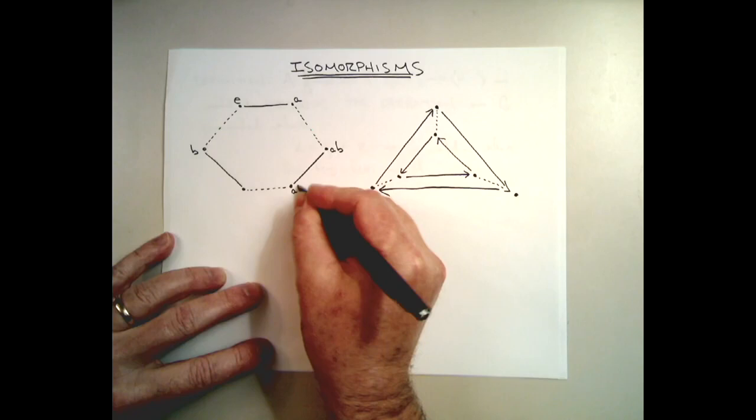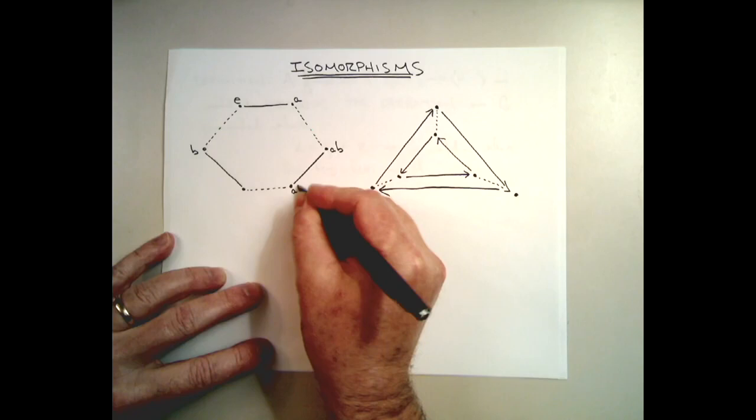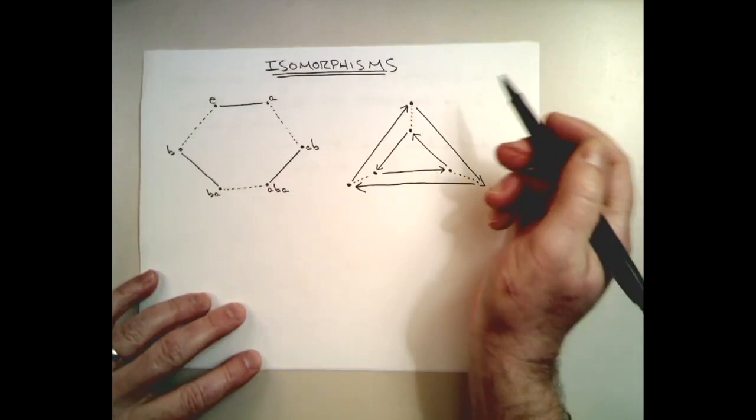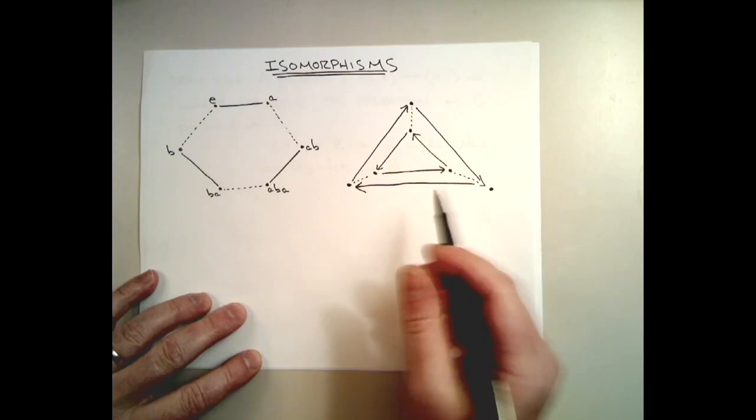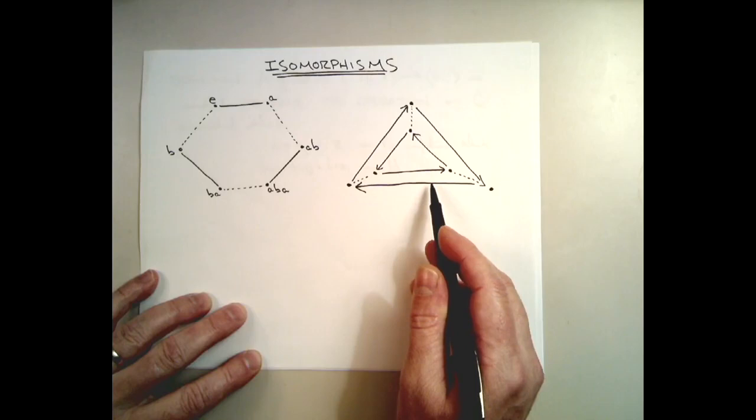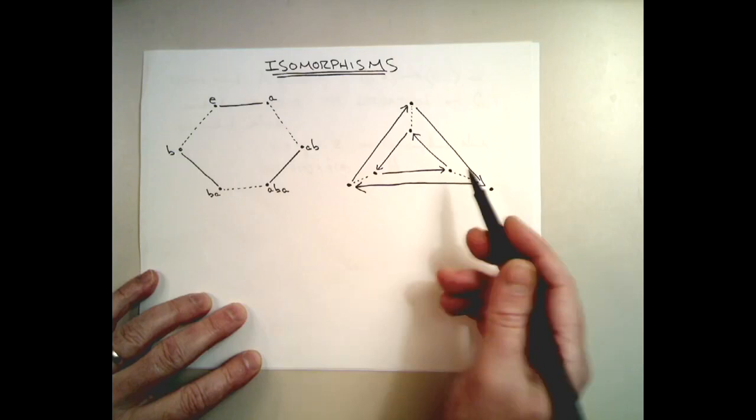Perhaps ABA over here, maybe BA for this element. And so we said that if we can represent this group by using this Cayley graph, then we can declare that the groups represented by these two Cayley graphs are isomorphic to each other. And that was our definition.